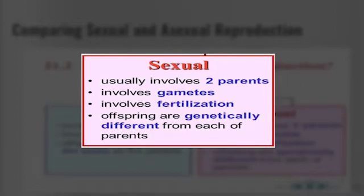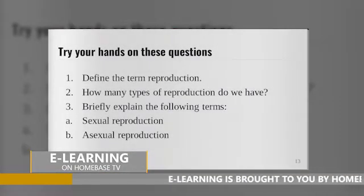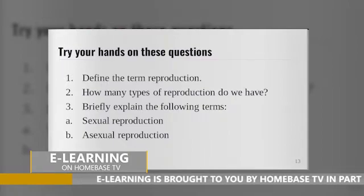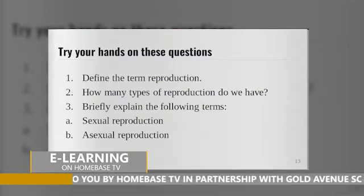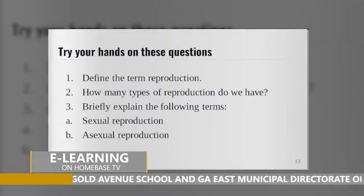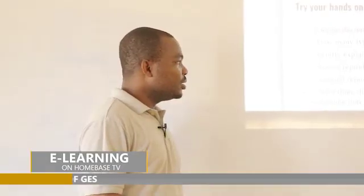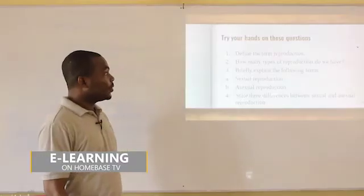Try your hands on these questions. One: define the term reproduction. Two: how many types of reproduction do we have? Three: briefly explain the following terms — A, sexual reproduction; B, asexual reproduction. You have four minutes for these questions. Stay tuned.